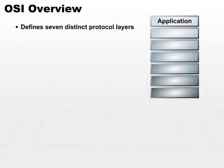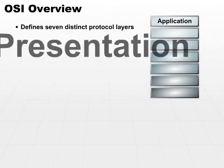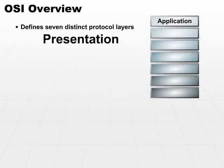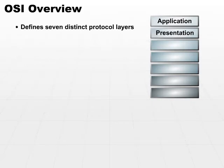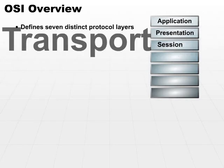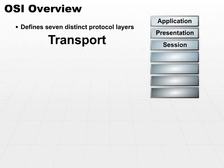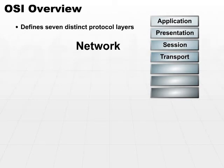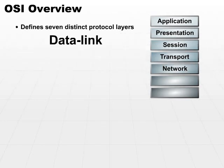Underneath the application layer, we have the presentation layer. We're going to look at each one of these layers in depth — this is just an overview of what the protocol stack looks like. Next, we have the session layer, the transport layer, the network layer, the data link layer, and last but not least, we have the physical layer.